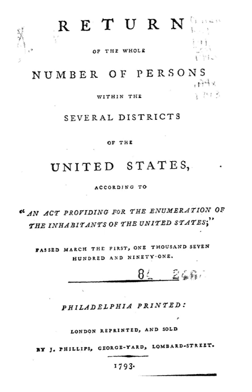Race and ethnicity in the United States Census, defined by the Federal Office of Management and Budget and the United States Census Bureau, are self-identification data items in which residents choose the race or races with which they most closely identify, and indicate whether or not they are of Hispanic or Latino origin. The racial categories represent a social-political construct for the race or races that respondents consider themselves to be and generally reflect a social definition of race recognized in this country.